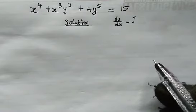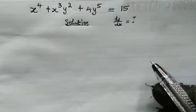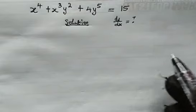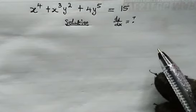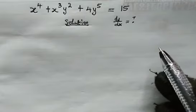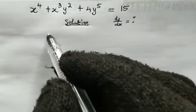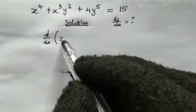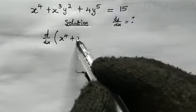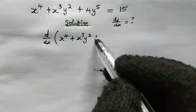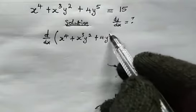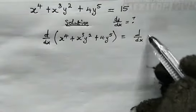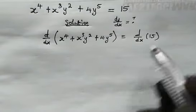Let's get started. We're going to make use of the method of implicit differentiation. We're going to differentiate both sides of this equation with respect to x. So here we have d/dx of x to the power of 4 plus x cubed y squared plus 4y to the power of 5. This is also equal to d/dx of 15.